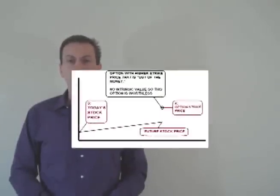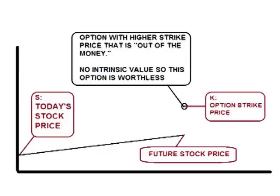It is also important to note that with the risk removed, an option with a higher strike price — what is called an out-of-the-money option — has no price or value at all. It is only the risk or volatility of the stock, the uncertainty of movement, that gives an out-of-the-money option any value.